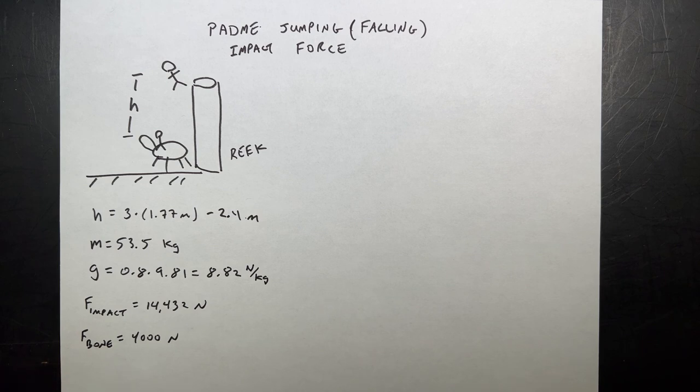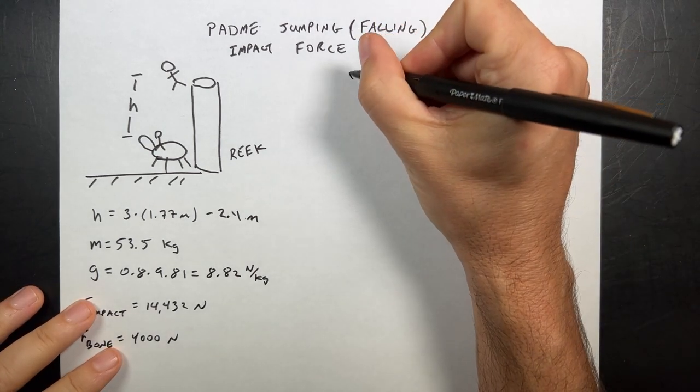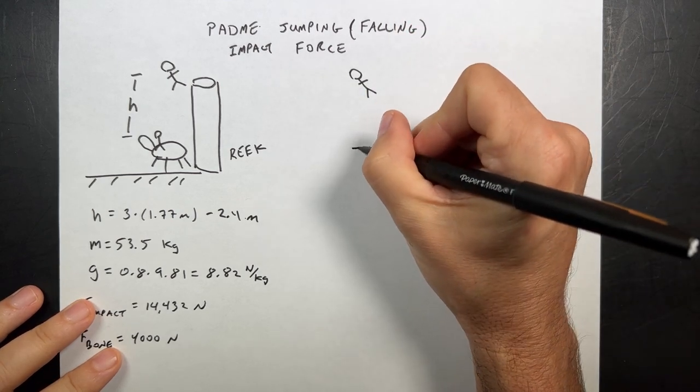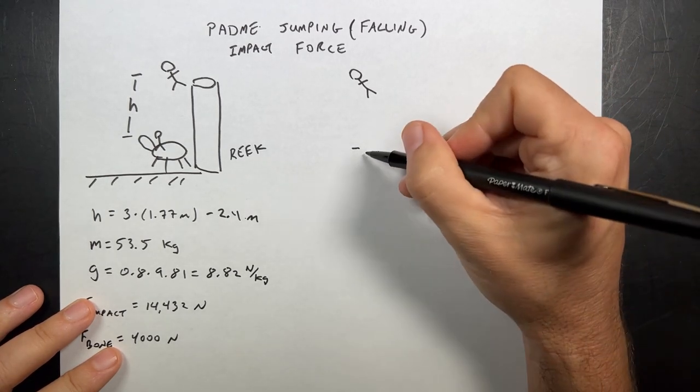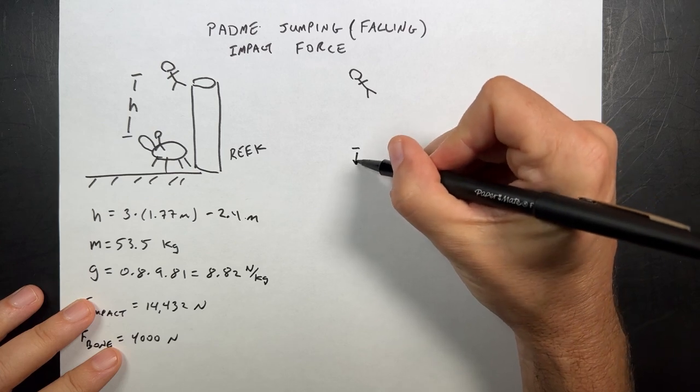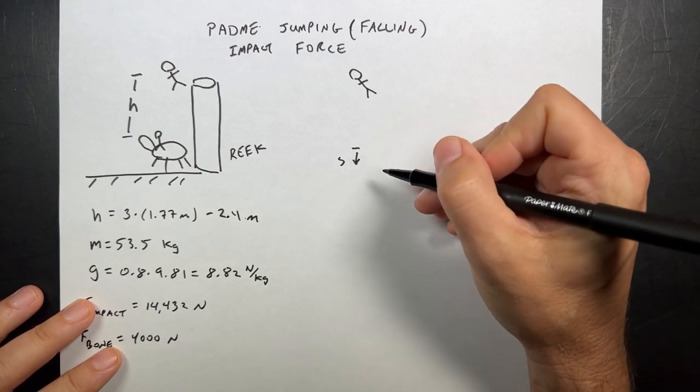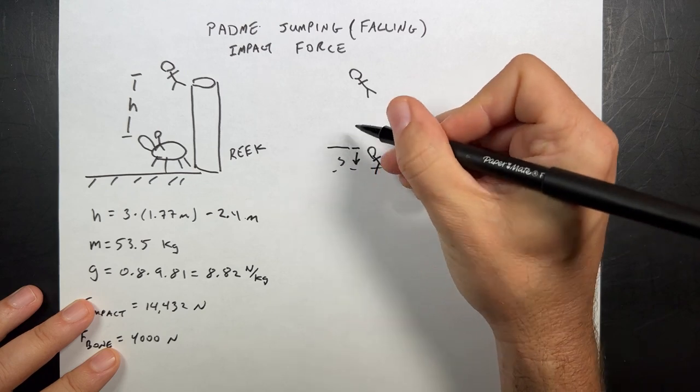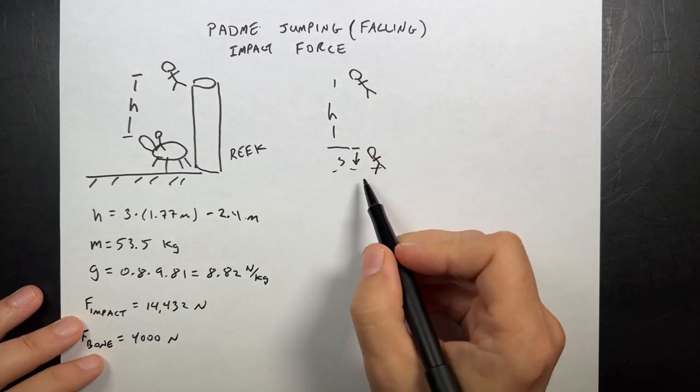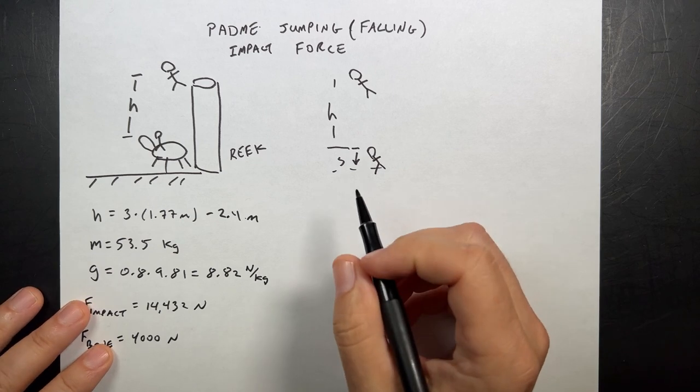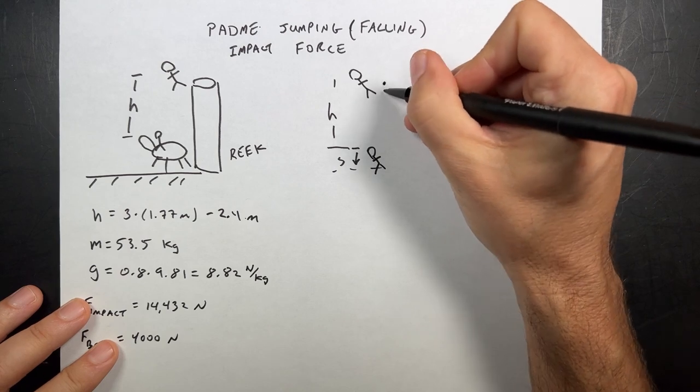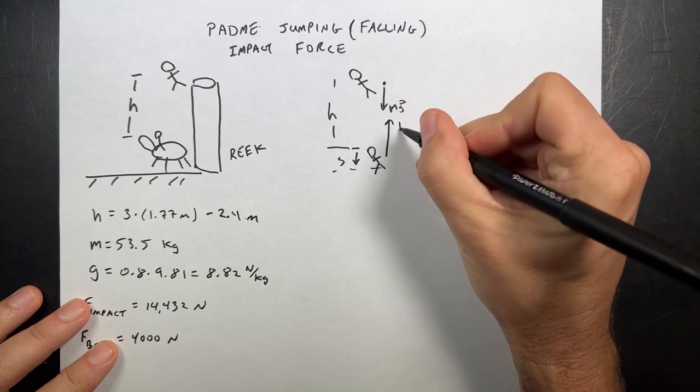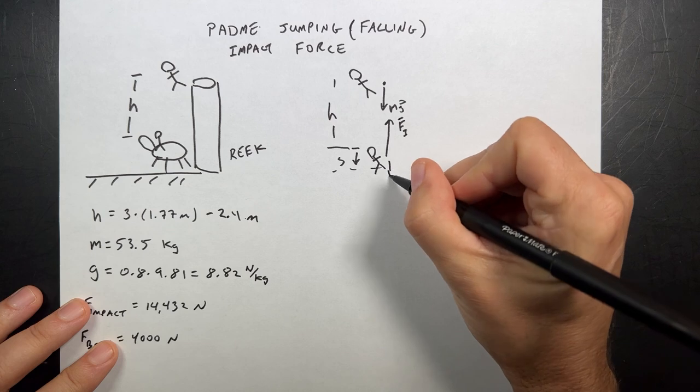She said it's a work energy problem. Boom, that's 100% correct. I'm actually going to draw just the important part. Here's Padme at the beginning, and then here is the point where she contacts the reek. And then the very important thing that she doesn't talk about: some distance, I'll call that S, that she travels during impact. We have a gravitational force pulling down right here, Mg, and then right during this part there's an upwards pushing impact force, I'll call it Fi, and then the downward gravitational force, Mg.